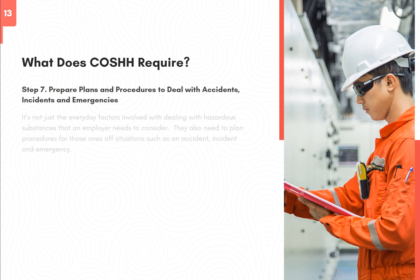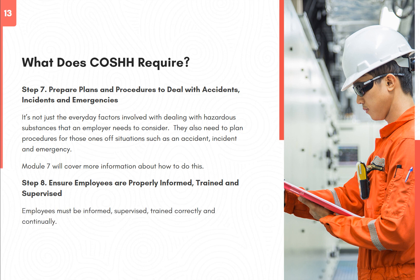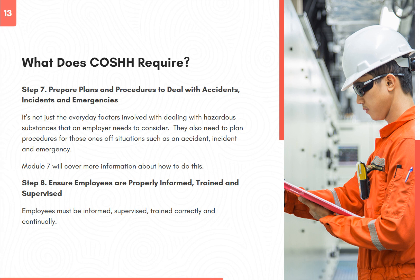Step 7: Prepare plans and procedures to deal with accidents, incidents and emergencies. It's not just the everyday factors involved with dealing with hazardous substances that an employer needs to consider — they also need to plan procedures for those one-off situations such as an accident, incident or emergency. Module 7 will cover more information about how to do this. Step 8: Ensure employees are properly informed, trained and supervised. Employees must be informed, supervised, and trained correctly and continually.